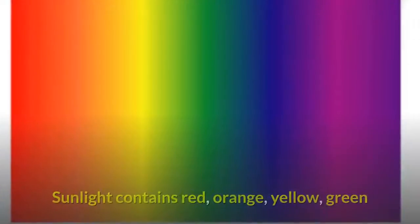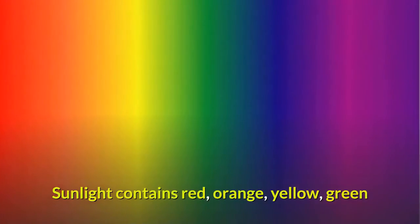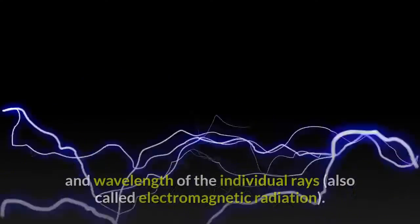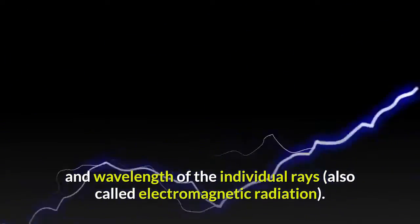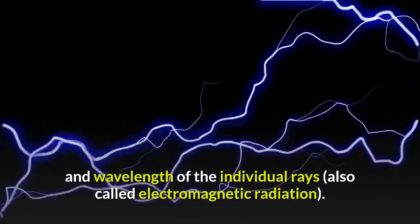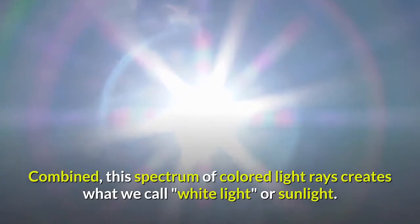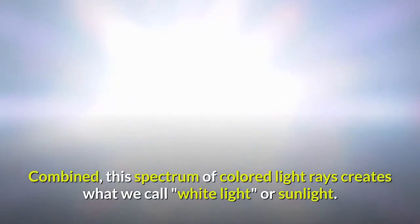What is blue light? Sunlight contains red, orange, yellow, green and blue light rays and many shades of each of these colors, depending on the energy and wavelength of the individual rays, also called electromagnetic radiation. Combined, this spectrum of colored light rays creates what we call white light or sunlight.